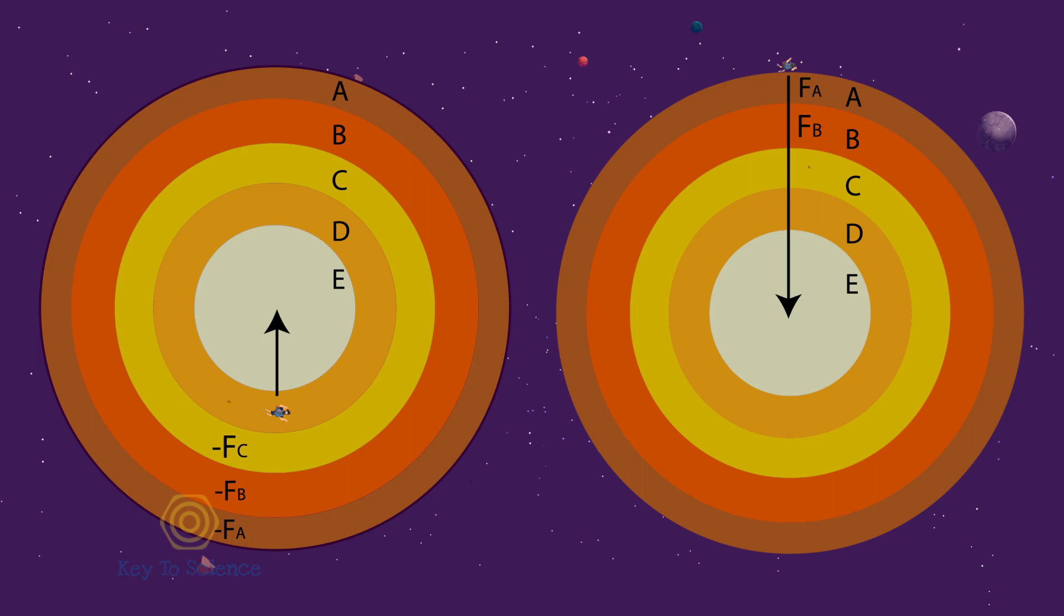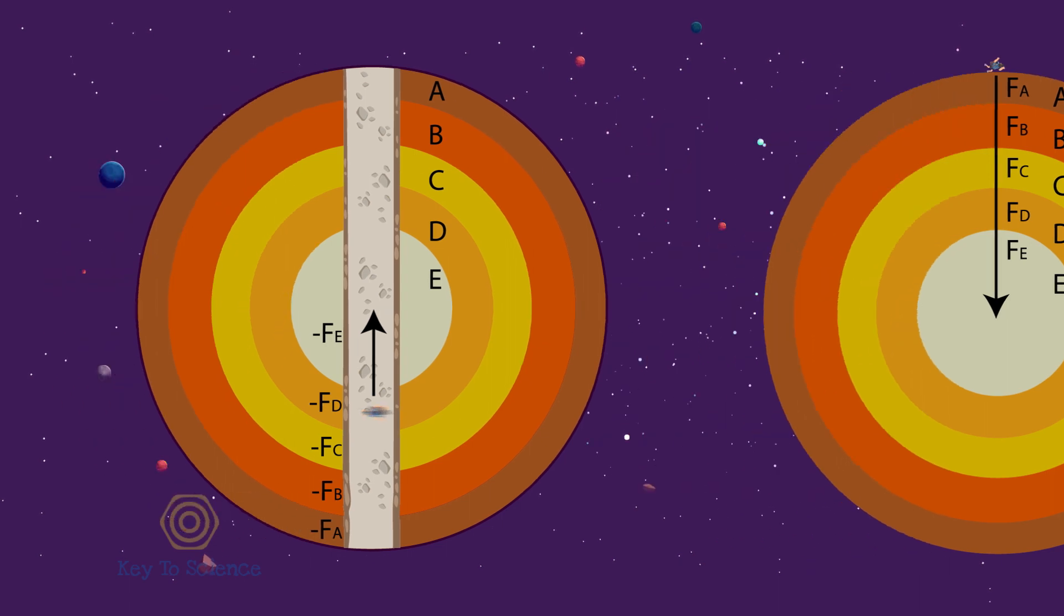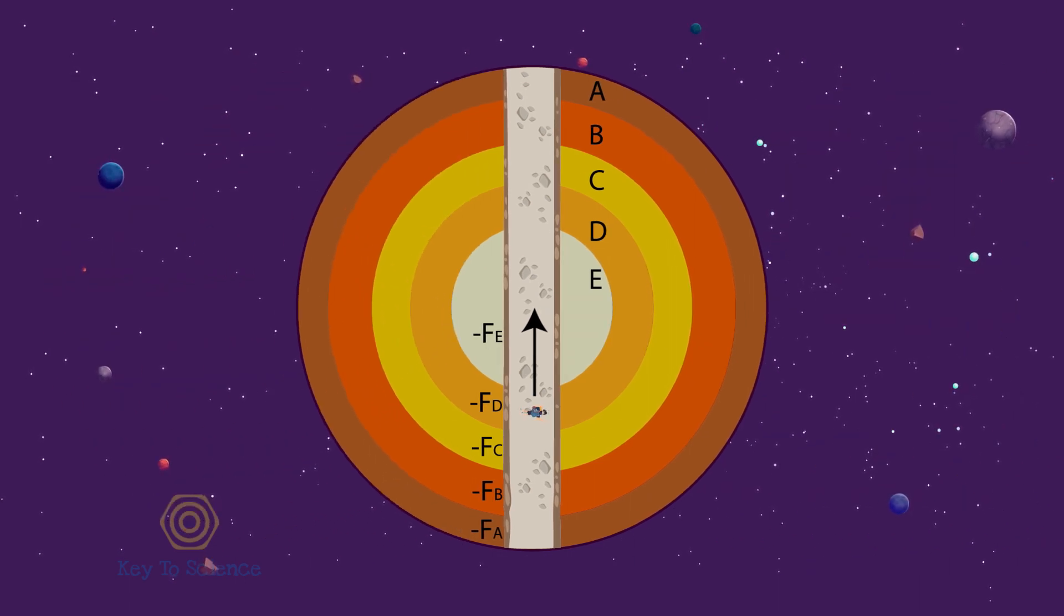All of these forces are just equal and opposite to the previous forces, those that were pulling us to the center. Therefore, with this velocity and negative acceleration, we'll just reach the other end of the tunnel. When we are at the end of the tunnel, our velocity will be zero again.